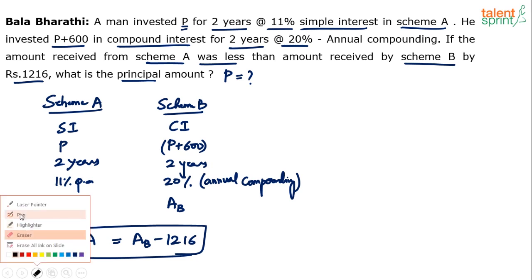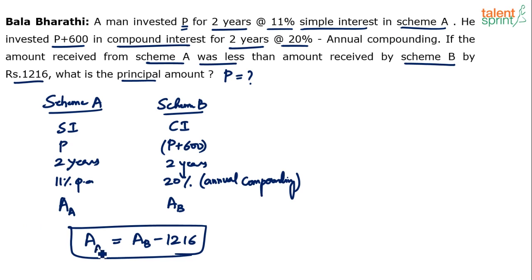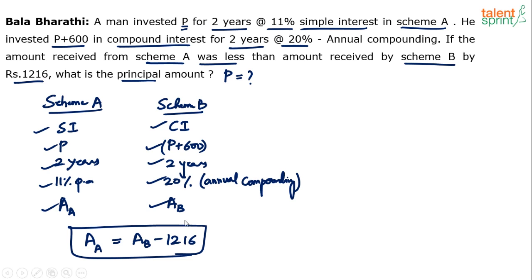So this is the data and the question. Different values have been given: simple interest or compound interest, P or P plus 600, 2 years in both cases, 11% and 20%. Amount is interest plus principal. So, amount of A equals amount of B minus 12.16.